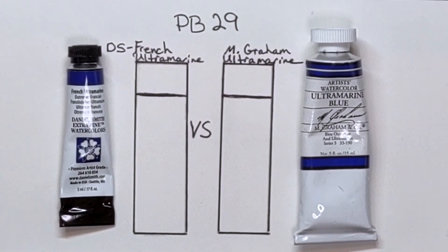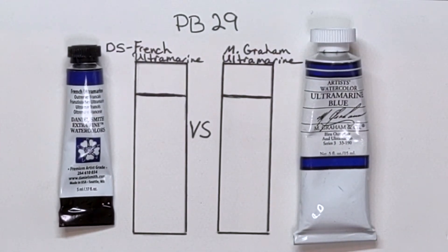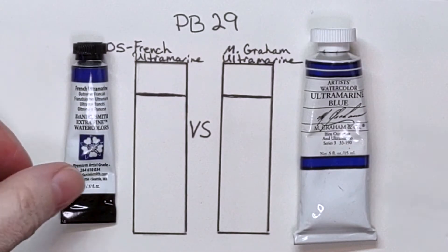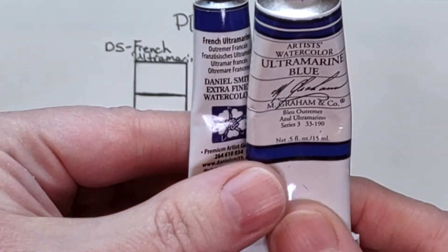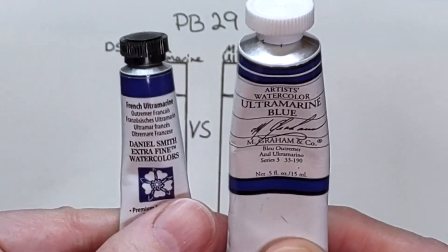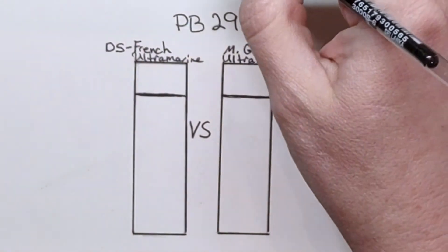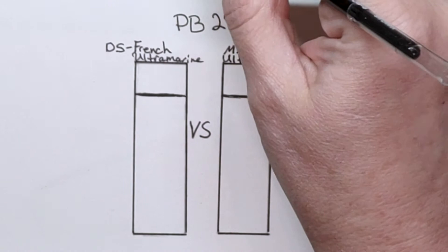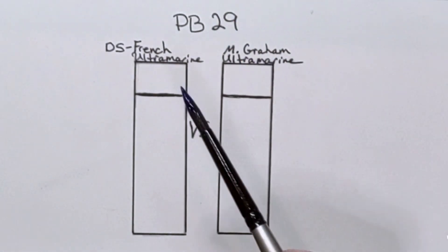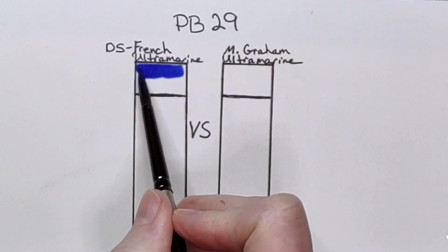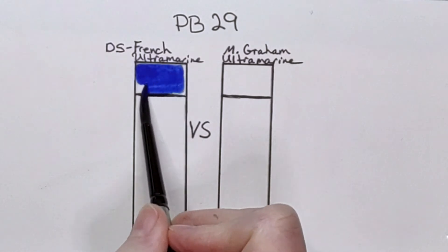In this video I'm going to be doing a comparison of the pigment PB29 between Daniel Smith, which will be on the left, and M. Graham will be on the right. The Daniel Smith is called French Ultramarine and the M. Graham one is Ultramarine, but the pigment number is the same. I am taking this straight from the tube off of my ceramic plate and this is the Daniel Smith.